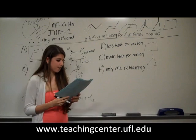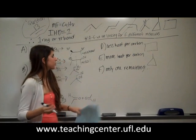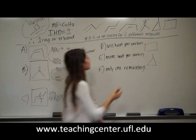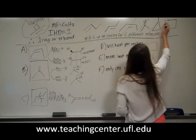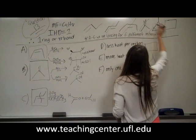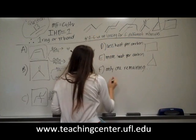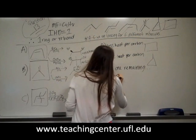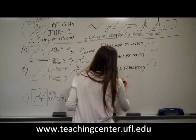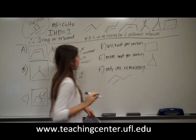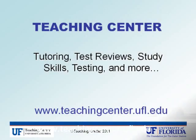Part F is simply the only remaining isomer. After knocking off all the others, whatever is left on the list is the answer for Unknown F.